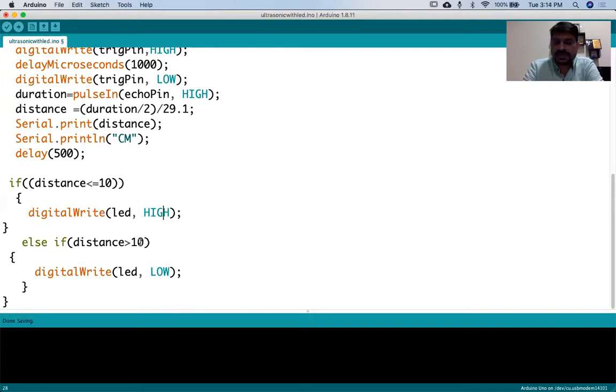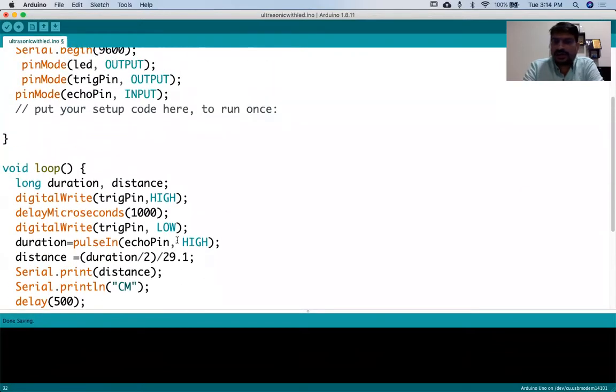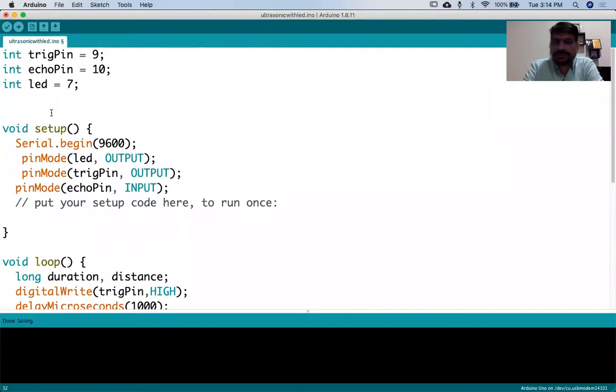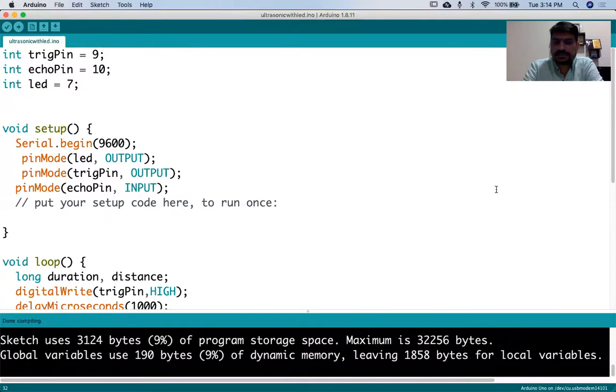If the distance from the object is greater than 10, then we'll make it as low. That is the logic that we have added. Rest of the thing is the same. Let's verify it and compile it. After compilation it says there is no issue with this particular program.